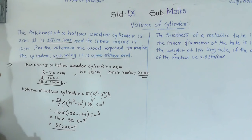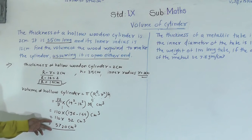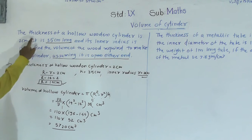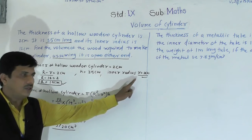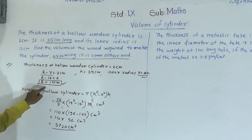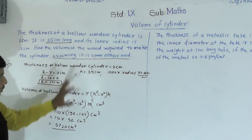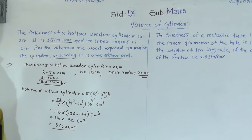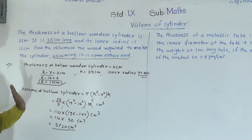So 5720 cm³ is the volume of the wood. This is our final answer. In this example of a hollow cylinder, the thickness and inner radius were directly given. We used those to find the external radius, then applied the hollow cylinder volume formula to get 5720 cm³.